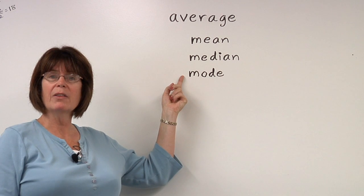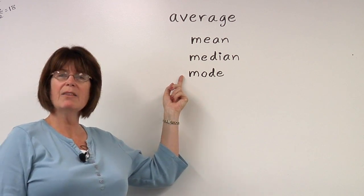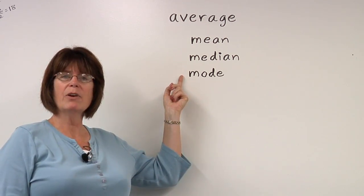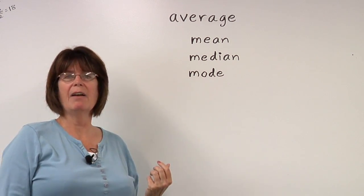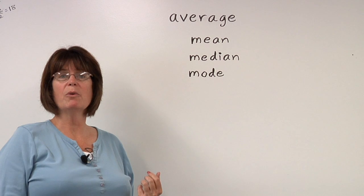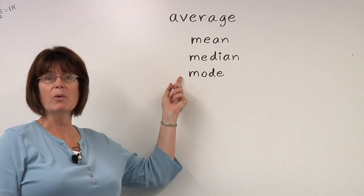The mode, on the other hand, would be for data that tend to be very similar to each other, where many pieces of data have the same value. You would find the most common value to find the mode.